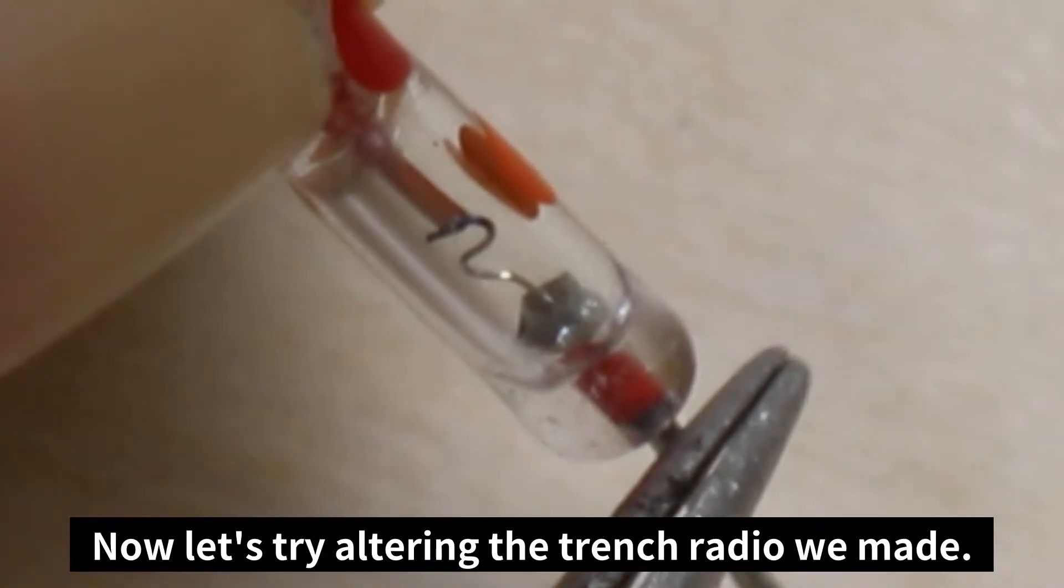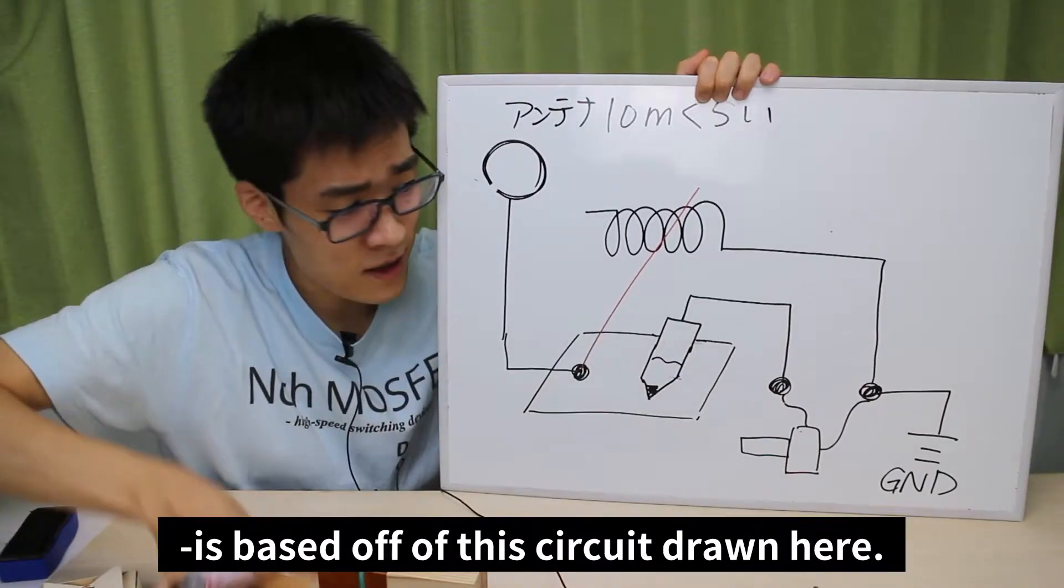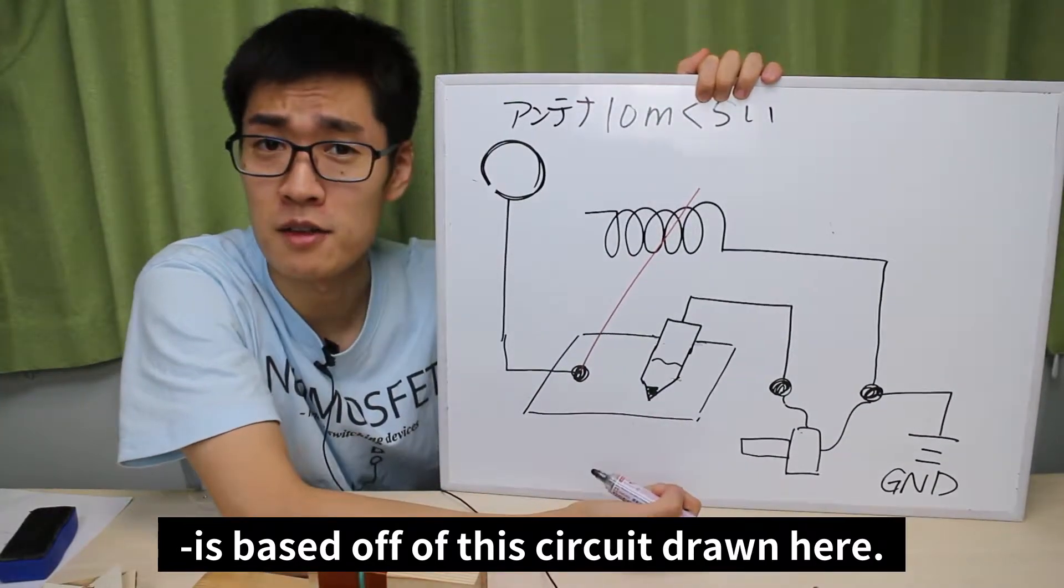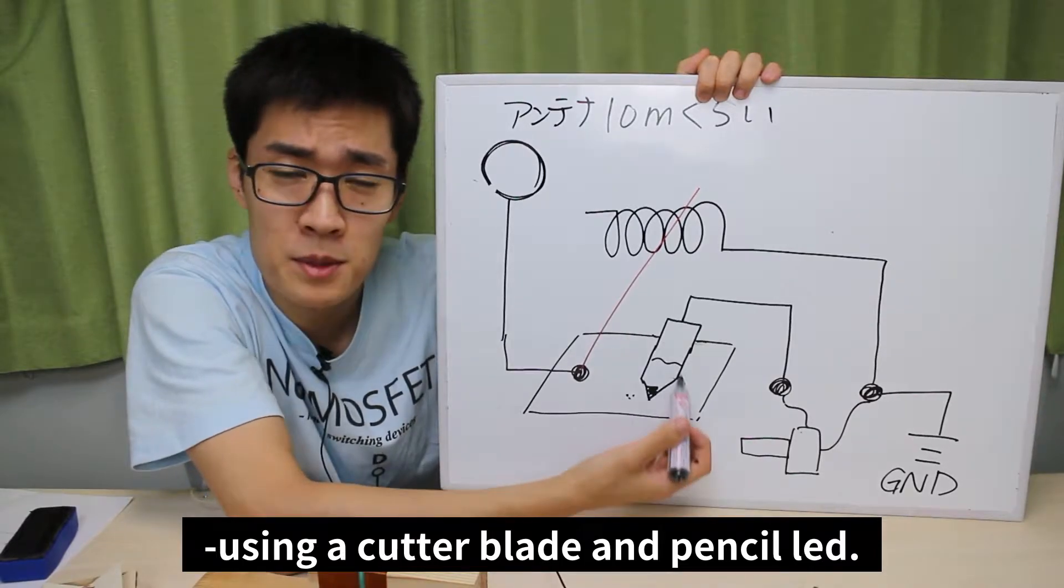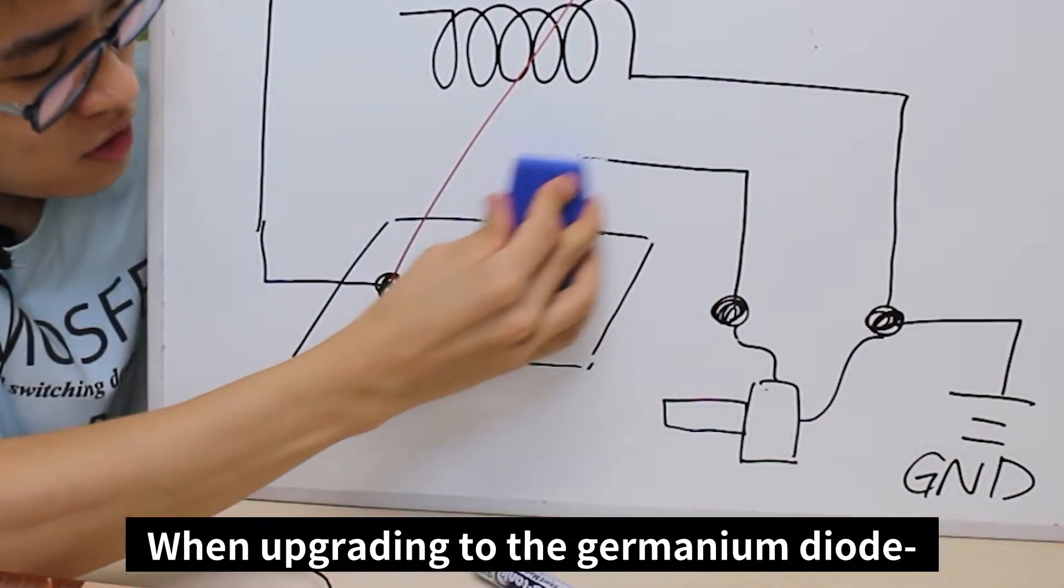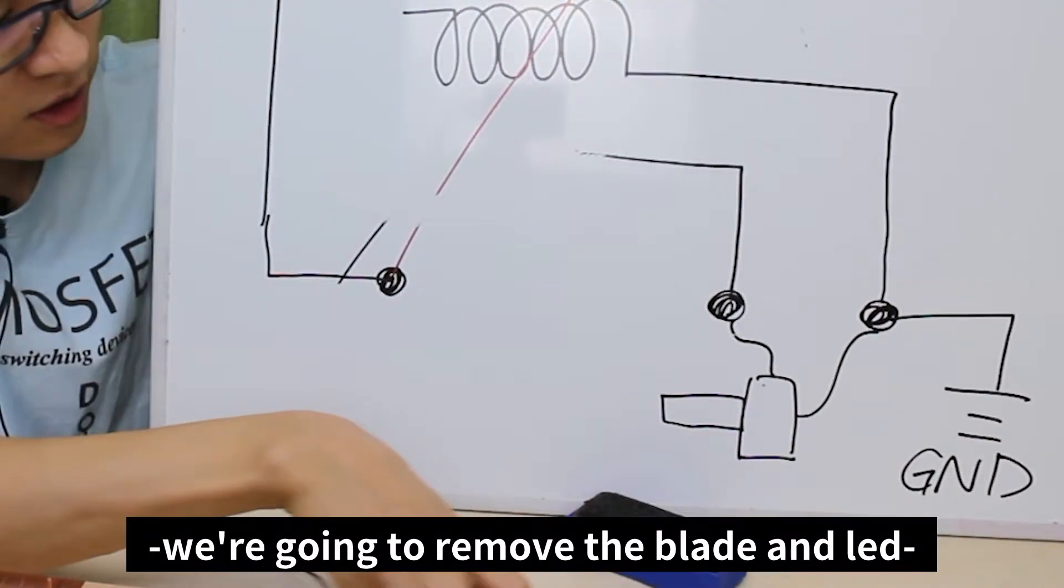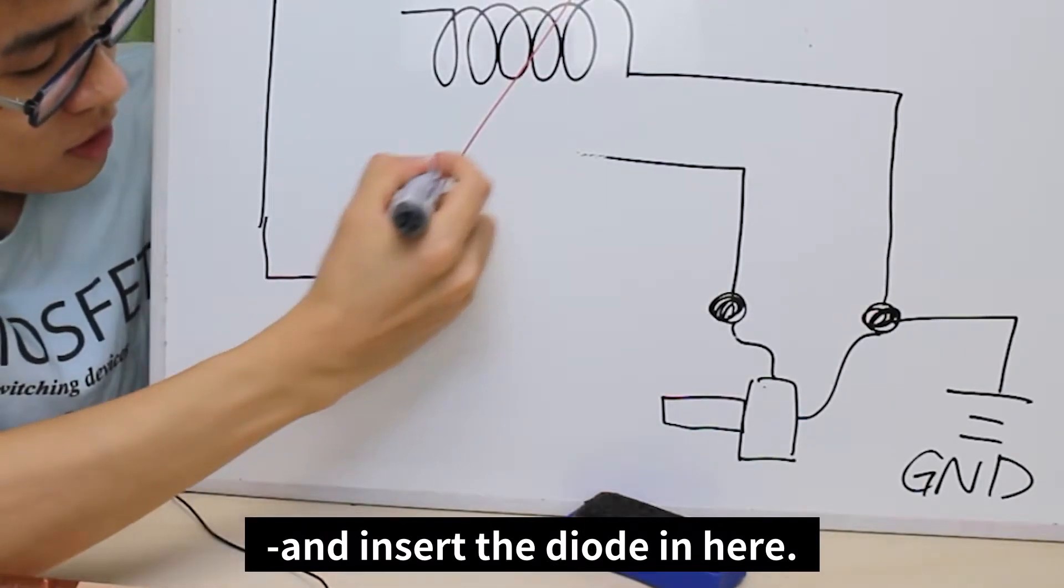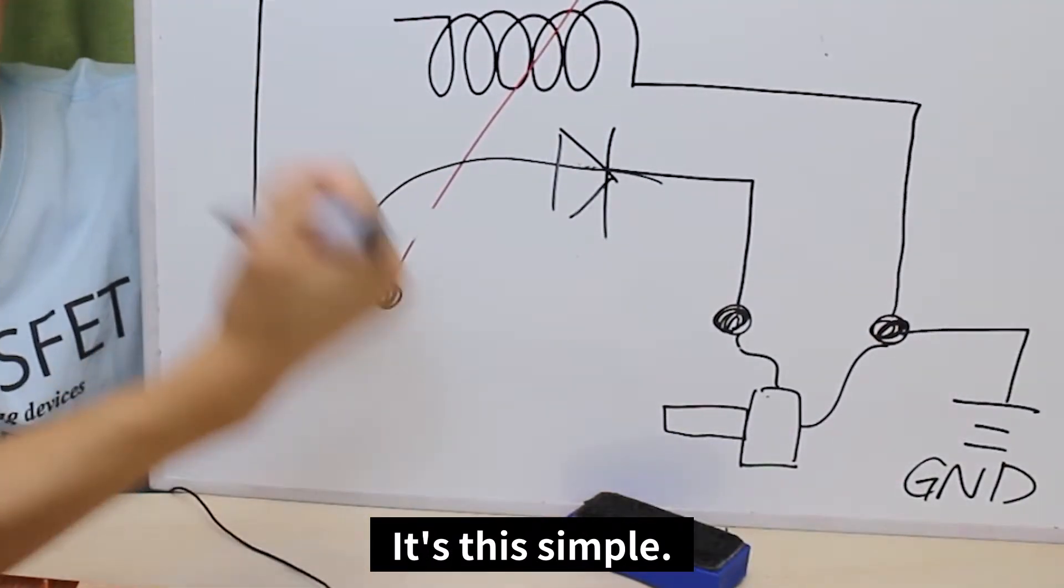Now let's try altering the trench radio we made. I say upgrade, but it isn't that hard to be honest. The trench radio we made previously is based off of this circuit drawn here. We made the detector component using a cutter blade and pencil lead. When upgrading to the germanium diode, we're going to remove the blade and the lead and insert the germanium diode in here. It's just that simple.